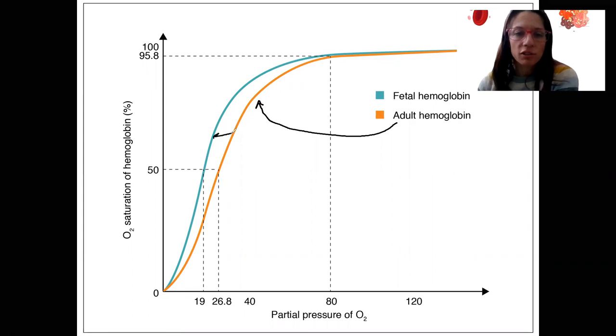What's up with this left shift? Does that make sense? Left shift, what does that mean? That means increased affinity - increased binding. So it's going to bind oxygen more easily than adult hemoglobin.